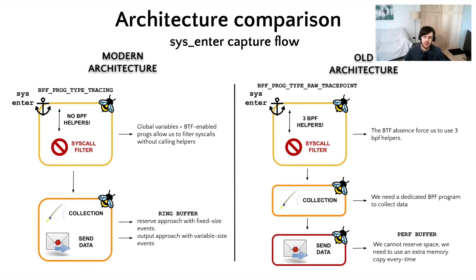Now let's focus on what happens after the tail call. In the modern probe, thanks to direct memory access and two extended tracepoints, we are able to collect data and push them to user space in just one BPF program. While in the old probe, as you can notice, we need at least two different programs — one for collecting data and the other for sending them. Another important difference is how we send data to user space. In the modern probe, we use the ring buffer approach, sending fixed-size events through the reserve mechanism, while for variable-size data we use the output API with an extra memory copy. In the old probe, we are obliged to copy every single event twice before sending it, because the perf buffer doesn't offer any reserve approach. These are some of the most interesting high-level benefits that we can gain from the modern BPF features.